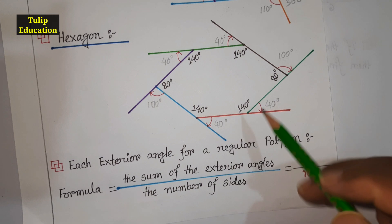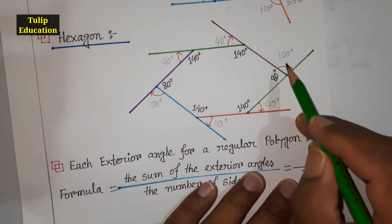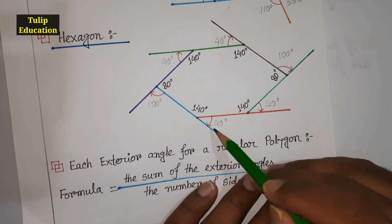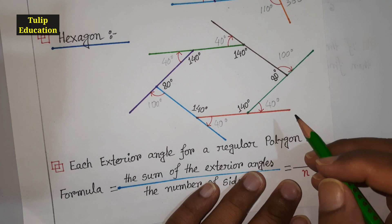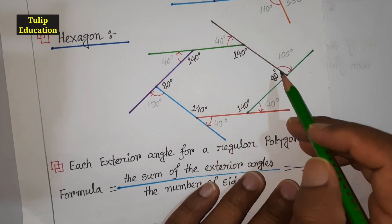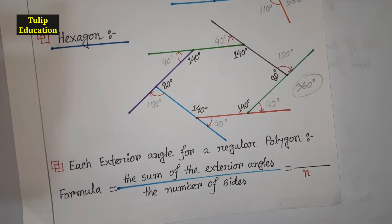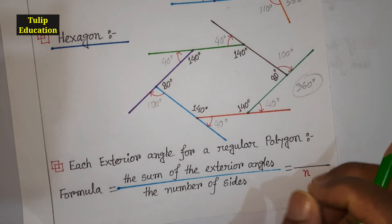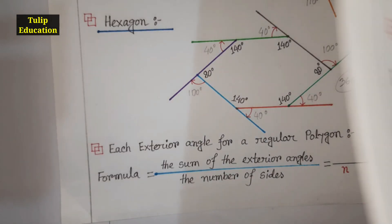Adding those exterior angles: 100° + 100° = 200°, and four angles of 40° = 160°. So 200° + 160° = 360°. This confirms that the sum of exterior angles of any polygon is always 360°.